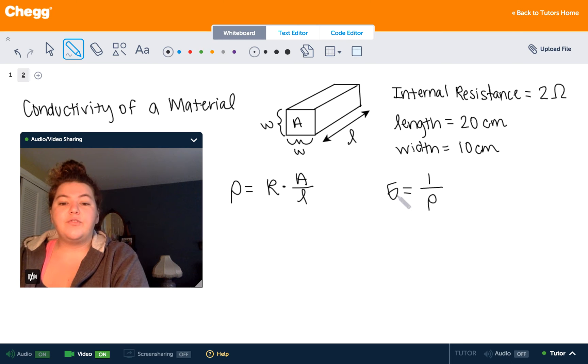So from resistivity, we can find conductivity. So let's say we want to find the conductivity of this material right here. Well, we have the internal resistance, which is two ohms, and we have length and we have width of these sides of the square here.